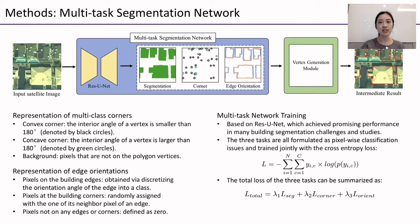The orientation types of pixels at building corners are randomly assigned with one of their neighboring edge pixel orientations. For each pixel not on any edges or corners, the orientation type is defined as zero. Our multi-task network is based on the ResUNet architecture, which has achieved promising performance in many building segmentation challenges. The three tasks are all formulated as pixel-wise classification issues trained jointly with the cross-entropy loss.